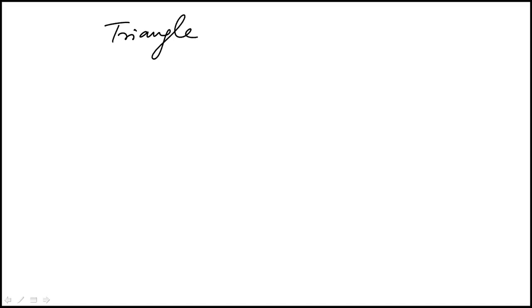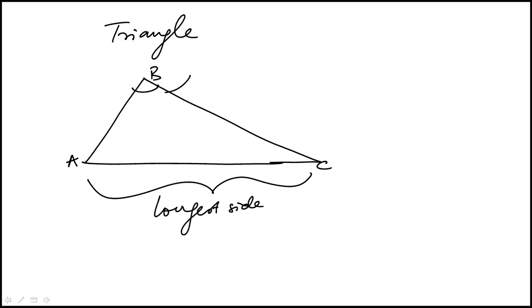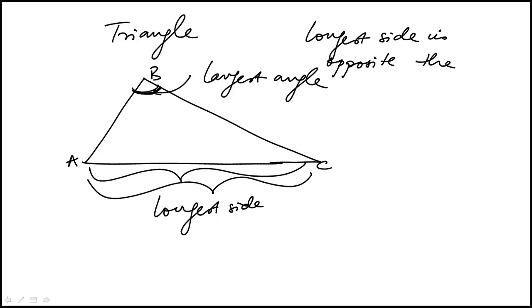Moving on to triangles — there is a relationship between the length of the sides of a triangle and the angles that are opposite those sides. For triangle ABC, the longest side AC is opposite the largest angle. The reason is that if the opening is the greatest, it opens out opposite the longest side. The key rule to remember: the longest side is opposite the largest angle.